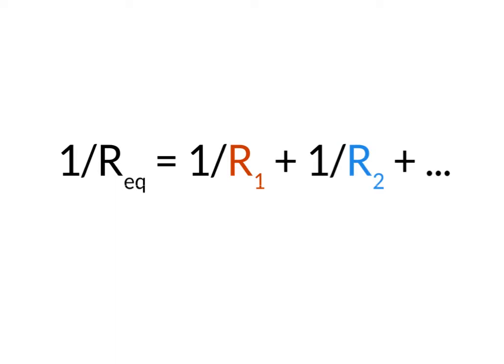So to find the equivalent resistance of a parallel circuit, 1 over my equivalent resistance is equal to 1 over the resistance of my first resistor plus 1 over the resistance of my second resistor. This seems really complicated — it is definitely more complicated than a series circuit — but I promise once you've seen an example, it will make a lot more sense.